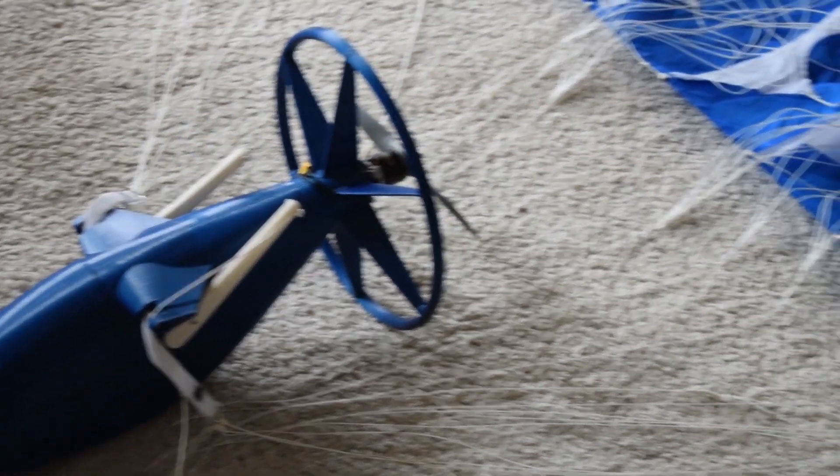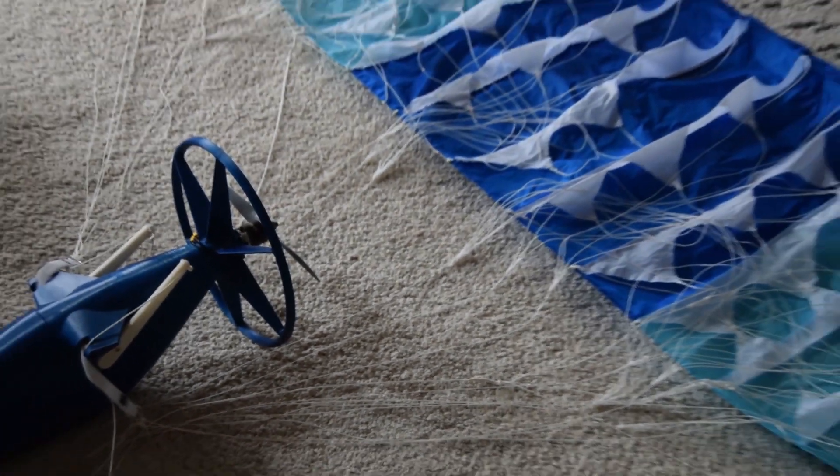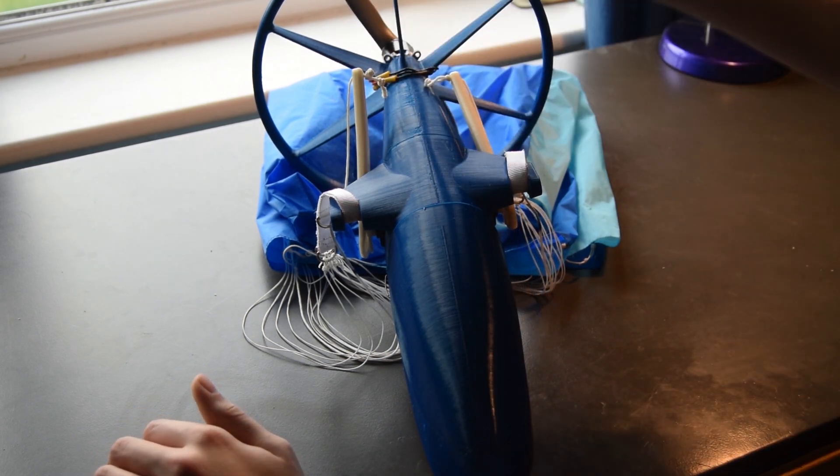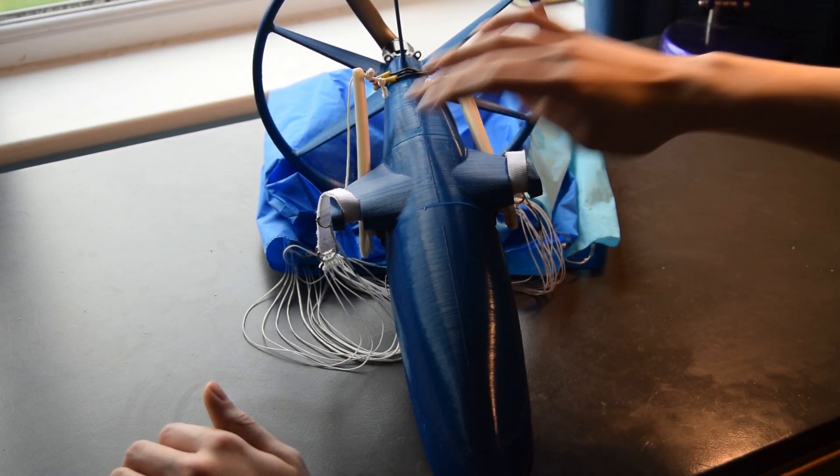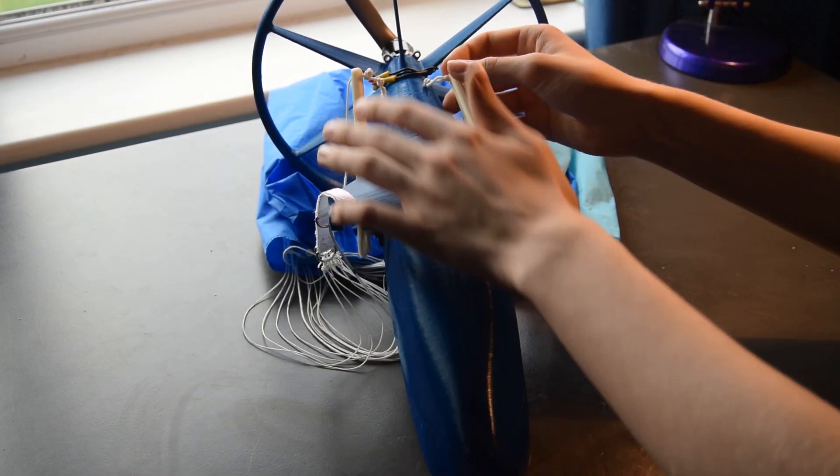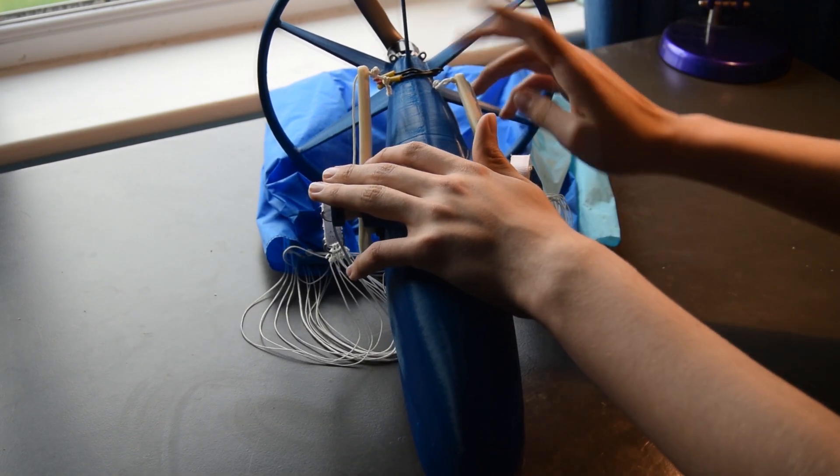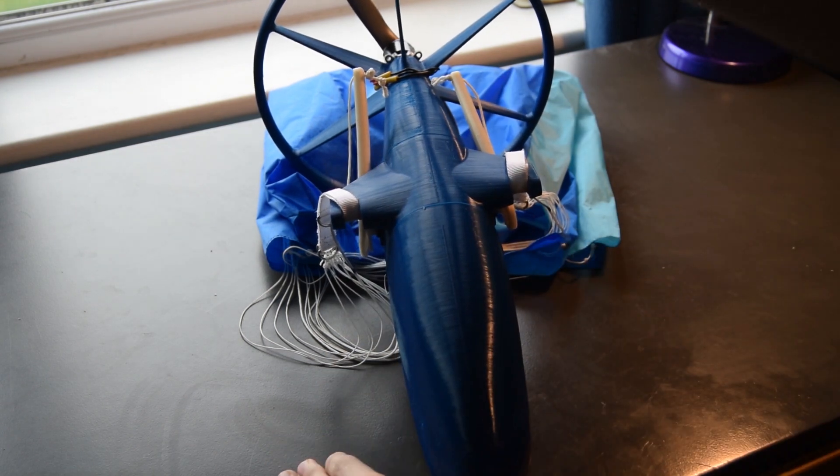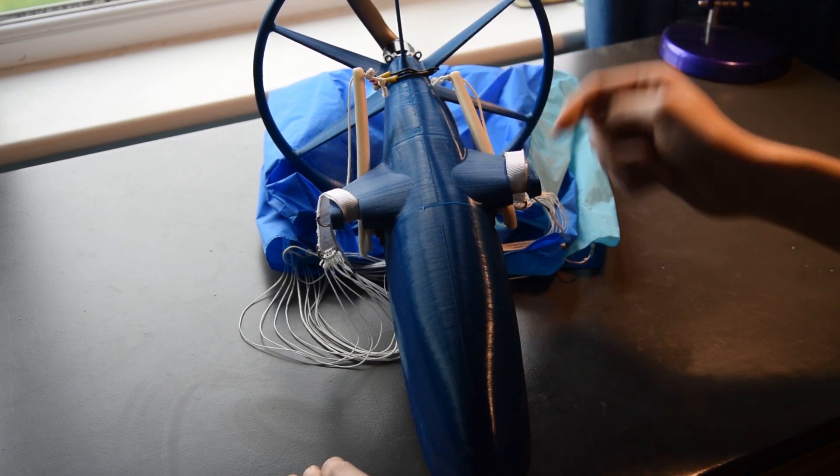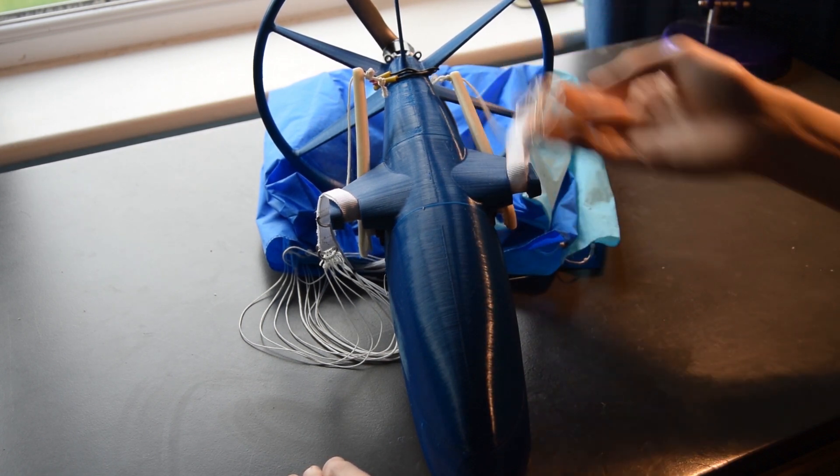He uploaded the files to Thingiverse where I printed the two main body sections. They took about a day. The actual setup of the paramotor took about two hours, but the strings took a bit longer to get my head around because it's a completely new process and you need the body to hang in a certain area that will make it fly well. I'll leave a link in the description to a video that helped me set all of the strings up.